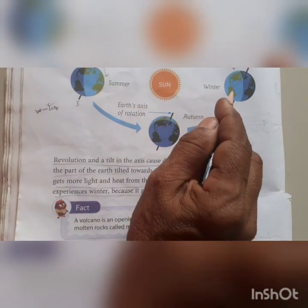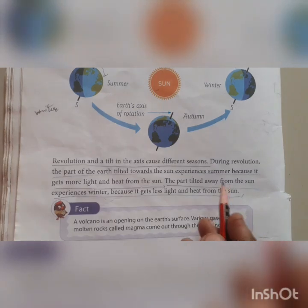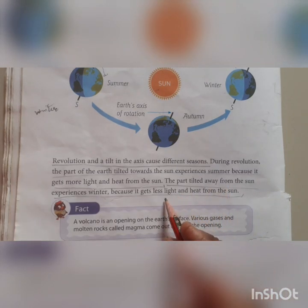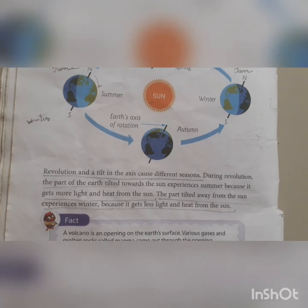The part tilted away from the sun experiences winter because it gets less light and heat from the sun. In winter, sunlight is reduced and it gets dark early in the evening. Less light and less heat from the sun causes winter.